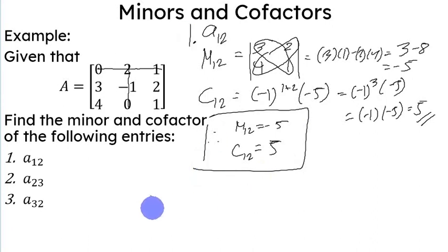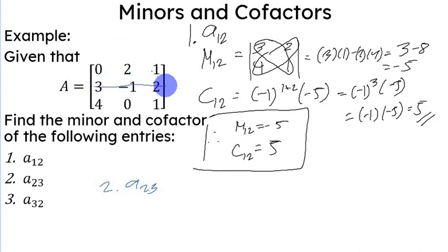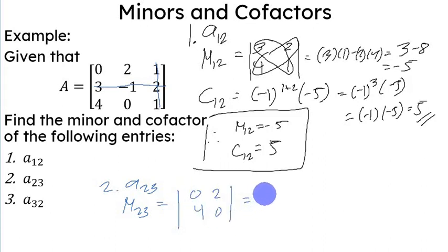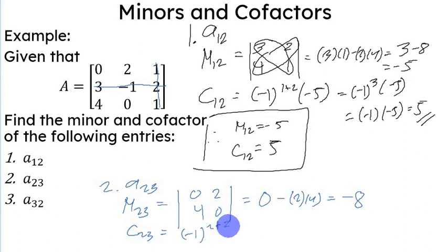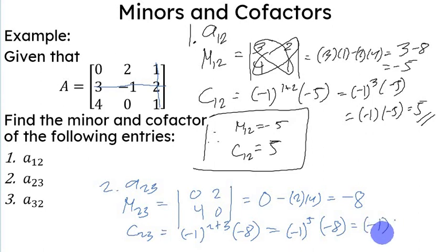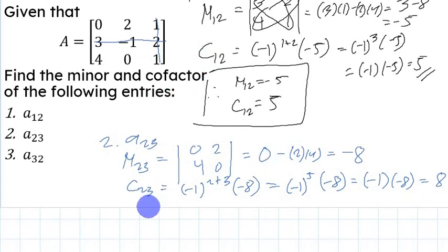For A sub 2 3, we delete the second row and the third column. The minor of A sub 2 3 is the determinant of the matrix 0, 2, 4, 0, which is 0 times 0 minus 2 times 4, giving negative 8. The cofactor of A sub 2 3 is negative 1 raised to 2 plus 3, times negative 8, which is negative 1 raised to 5 times negative 8, equal to positive 8. So, minor sub 2 3 is negative 8 and cofactor sub 2 3 is positive 8.